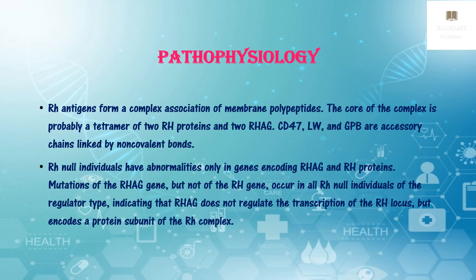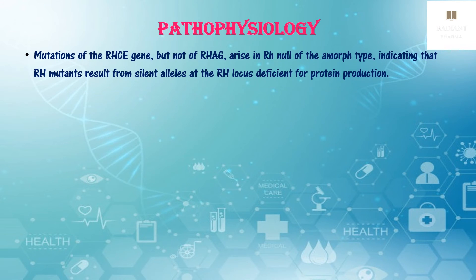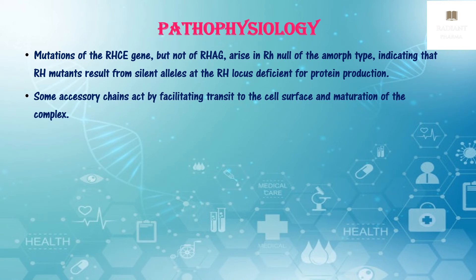Mutations of the RHAG gene, but not of the RH gene, occur in all RH null individuals of the regulator type, indicating that RHAG does not regulate transcription of the RH locus but encodes a protein subunit of the RH complex which is absent when RHAG is mutated. Conversely, mutations of the RHCE gene, but not of RHAG, arise in RH null of the amorph type, indicating that RH mutants result from silent alleles at the RH locus which are deficient for protein production.